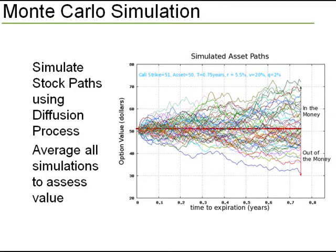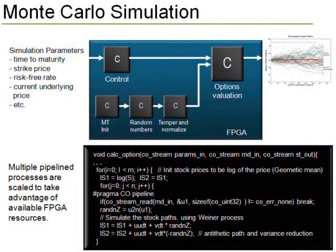This concludes our quick demonstration of random number generation on the SPARTA card. To put this in context, what we have done is one part of a larger Monte Carlo simulation currently under development. This particular Monte Carlo simulation is a financial options valuation simulation. The complete application will have random number generators, the temper-to-normal function, as well as a computation kernel that will do an iterative calculation to evaluate a European options value over time. The random number generator is fed by the initialization routine, which then feeds into the temper function that goes into the valuation. That's the application currently under development at Impulse.